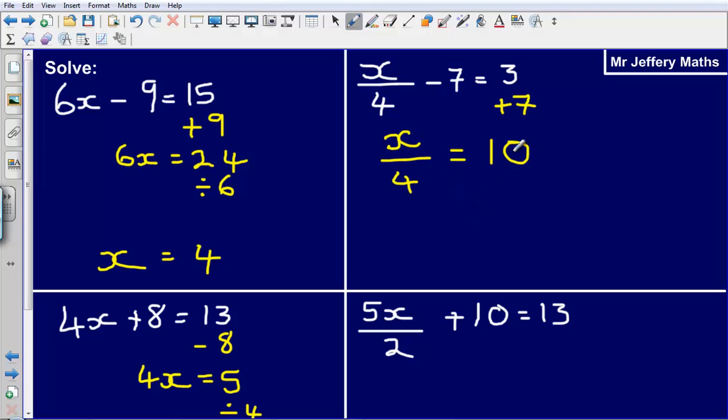Now I've got x divided by 4 is equal to 10. Then after that, to get rid of the divide by 4, I can just multiply by 4 and so that means that x is going to be equal to 10 times 4 which is 40.